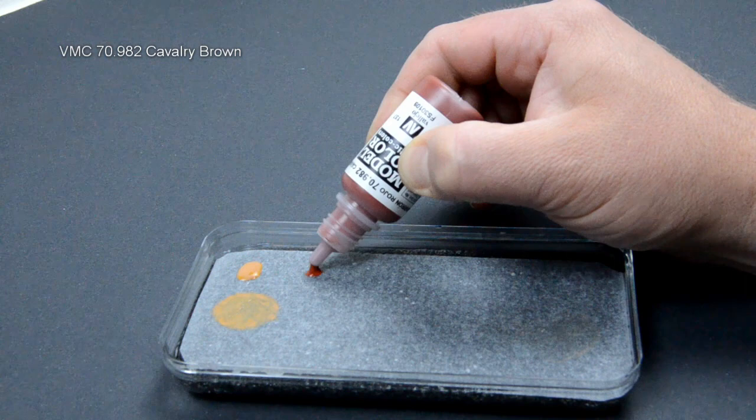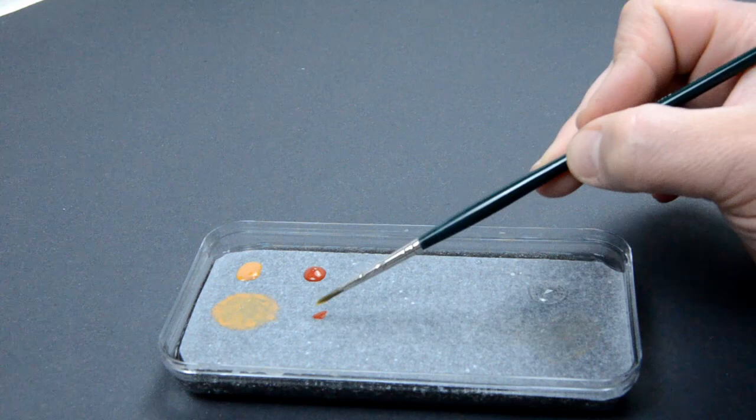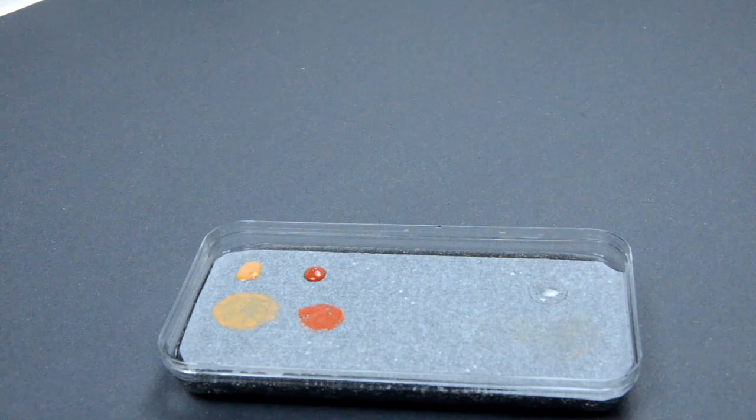For a nice warm shadow I used Cavalry Brown. But this one was thinned with paint drying retarder from AK. This is the first time that I used it. And I must say that it was money well spent. Let's see why.